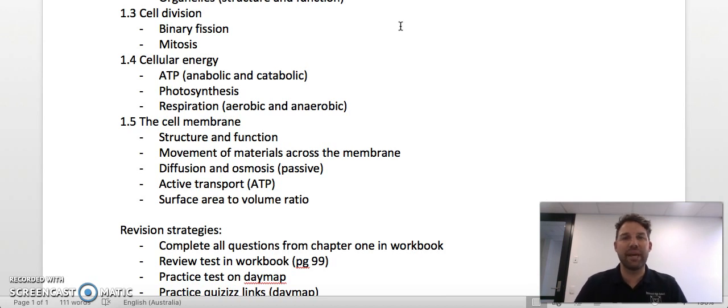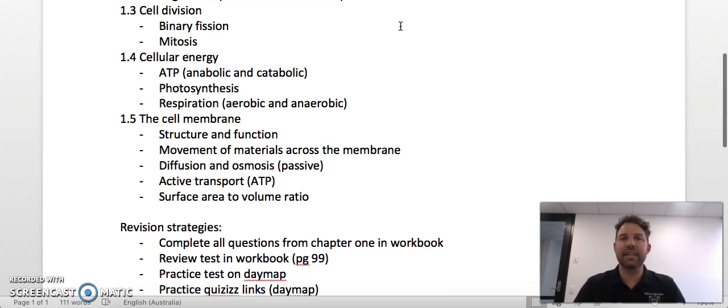Remember we thought of PMAT: prophase, metaphase, anaphase, telophase for mitosis. At the end of mitosis and binary fission, one cell will become two identical sister cells, daughter cells.